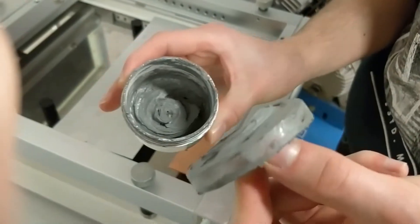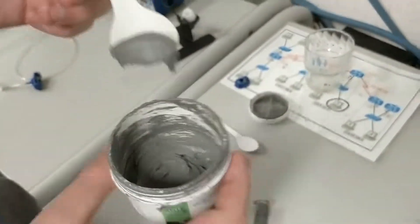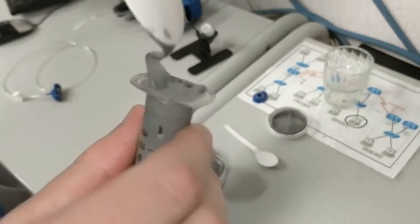Next is solder paste. Make sure there's enough paste in the syringe you want to use. You can add some solder paste with a small spoon if needed.